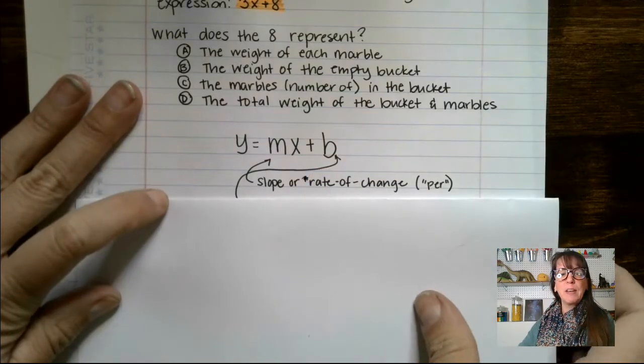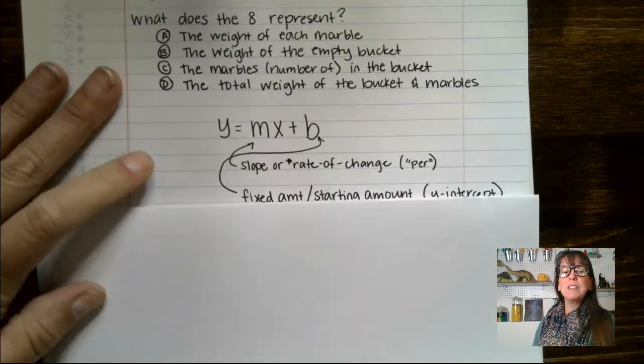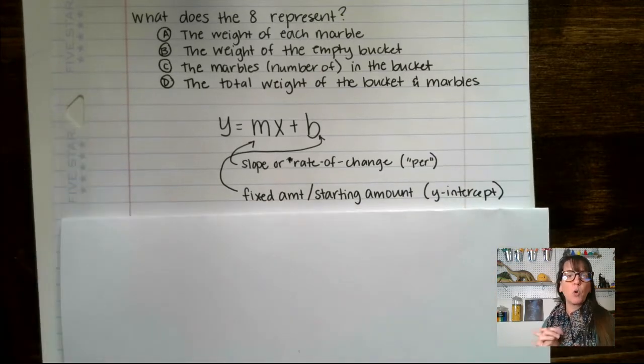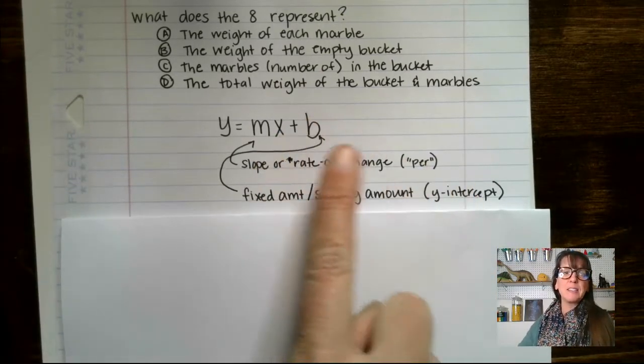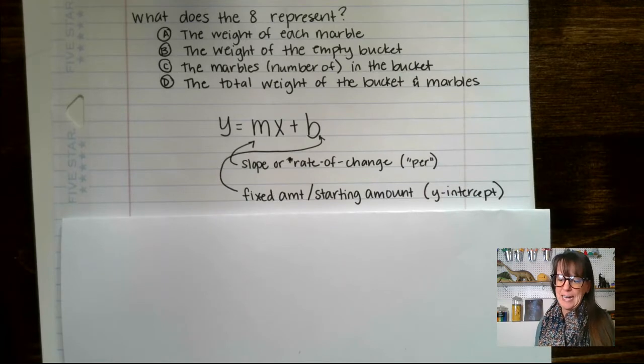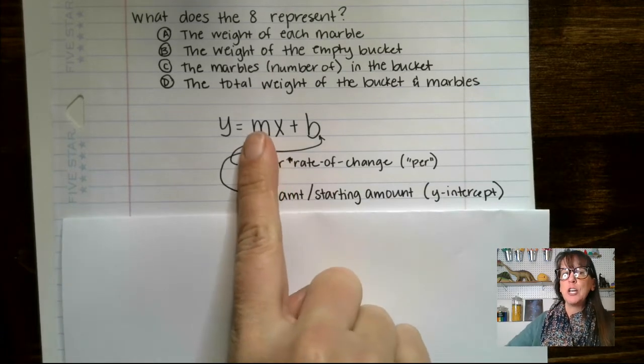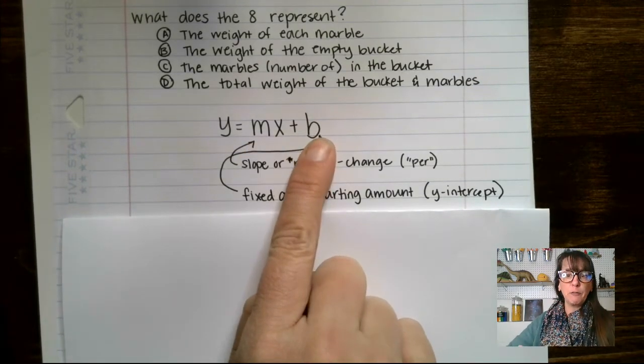Now for our b, you may have heard of that as our y-intercept, but it is also our fixed amount or our starting amount when it comes to word problems. You may want to write this information down. I think you will find it handy. This is going to be our changing amount and this will be our fixed amount.